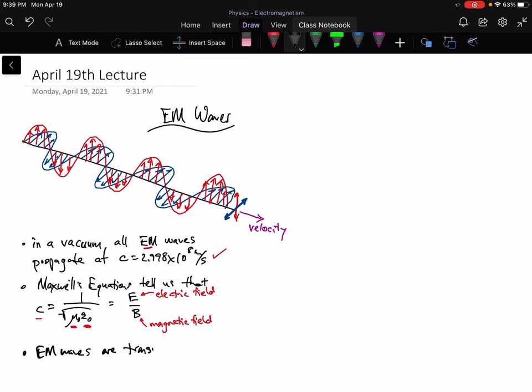EM waves are transverse. Now there are other transverse waves out there, a wave on a string, right, if you were to sort of take one end of the string and wiggle it back and forth, and so you have this wave propagating down it, the wave on the string is propagating away from you along the string, and the string itself is oscillating perpendicular to that direction of propagation.